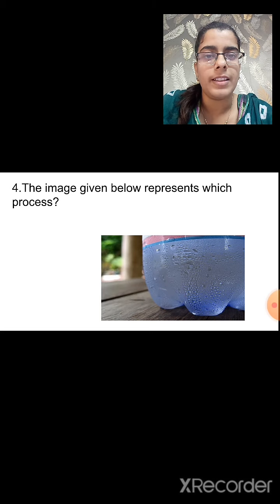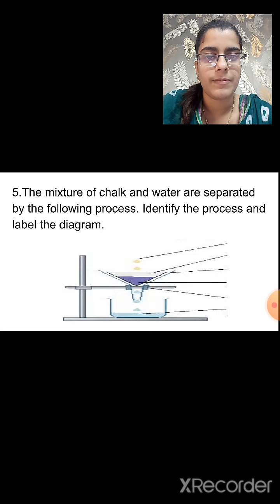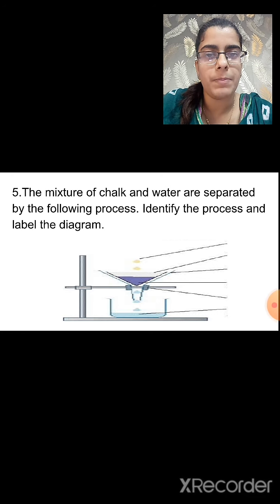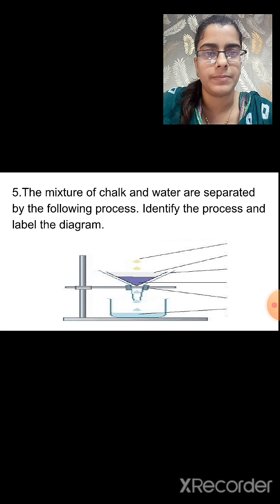Fourth question: the image represents the condensation process. Fifth question: the mixture of chalk and water is separated by the filtration process — draw the diagram in your notebook and label the different parts of the filtration assembly, such as funnel, stand, beaker, and filter paper. We will end our session here.